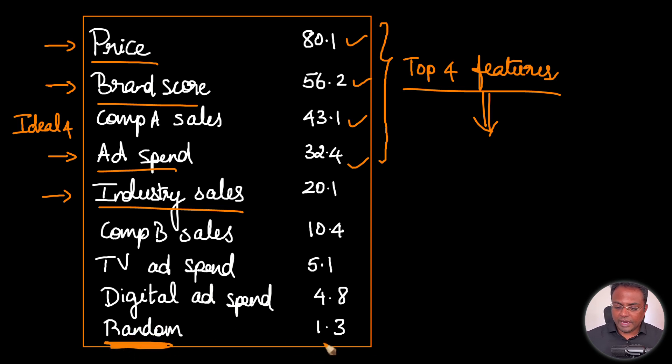You have a random variable here, random numbers, that is having a feature importance of 1.3. This means that all of these features have a number greater than the random number. These features do better than the random variable. But what we want really is this ideal four.